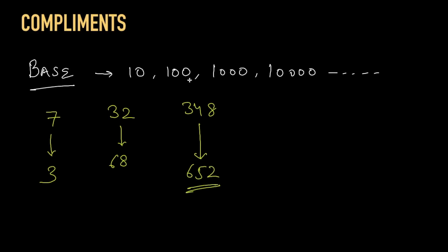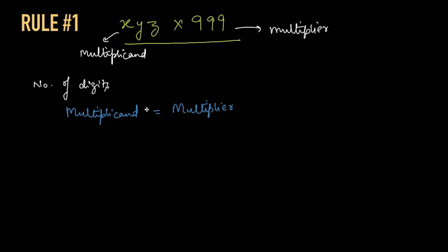We learned about complements because complements will be needed to understand the remaining rules to calculate faster. Right, so Rule Number 1: Whenever we multiply two numbers where one is a sequence of 99s, we need to remember three rules. The first rule is that both numbers being multiplied should have the same number of digits. The number we are multiplying with 999 is called the multiplicand, and the number being multiplied, which in this case would be 999, is the multiplier. So Rule 1 says that if the multiplicand and multiplier have equal digits, we have to follow certain steps.